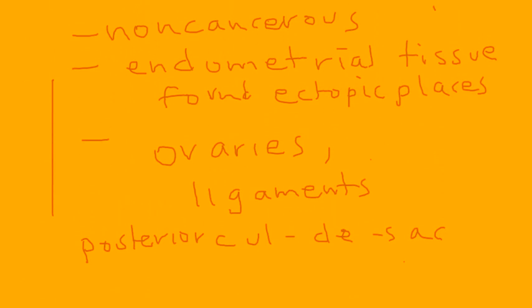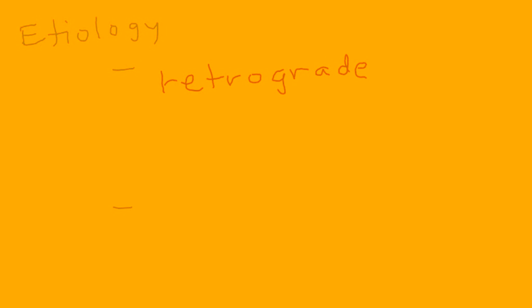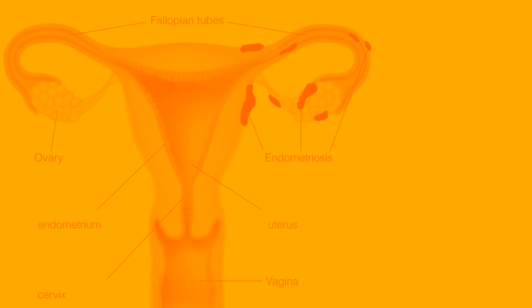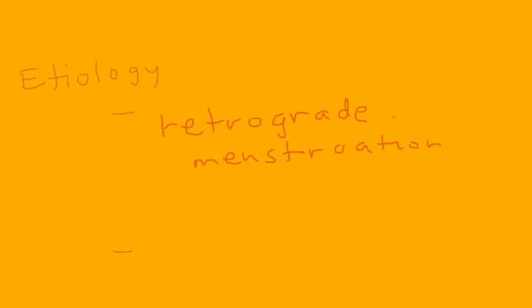So how does this happen? What is the etiology? There are two accepted hypotheses. The first involves retrograde menstruation. During normal menstrual flow the lining exits one way, but in retrograde menstruation the flow goes in the opposite direction, and it can carry endometrial tissue with it, depositing it in ectopic places.